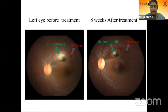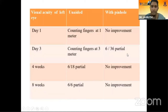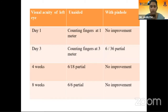This is a picture of the left eye showing before and after treatment, demonstrating the healing lesion adjacent to the old scar. Visual acuity in the left eye improved from counting fingers at 1 meter on day 1 to counting fingers at 3 meters with pinhole 6/36 partial on day 3. After 4 weeks it is 6/18 partial, and after 8 weeks it is 6/6 partial.